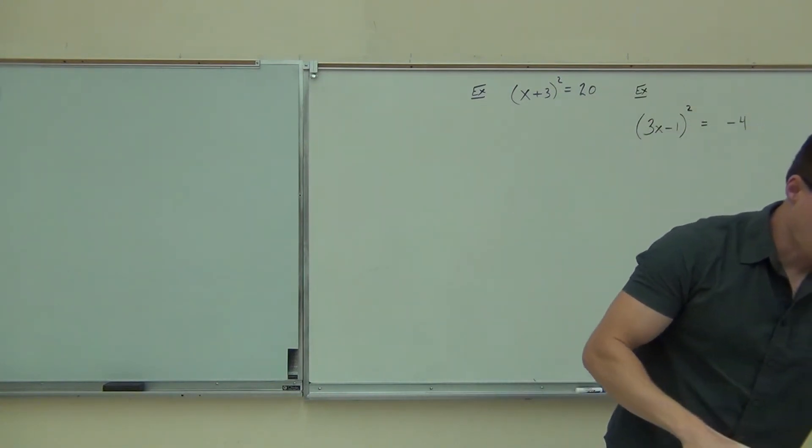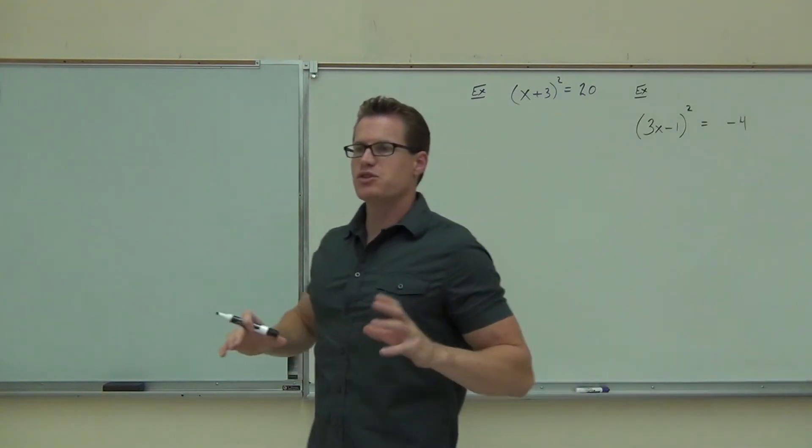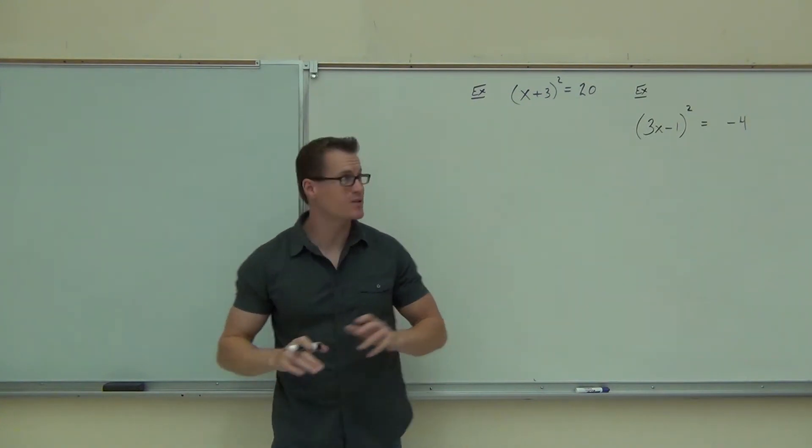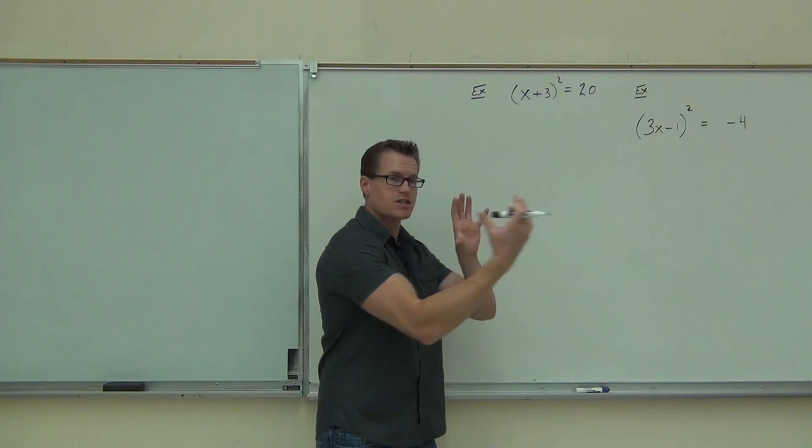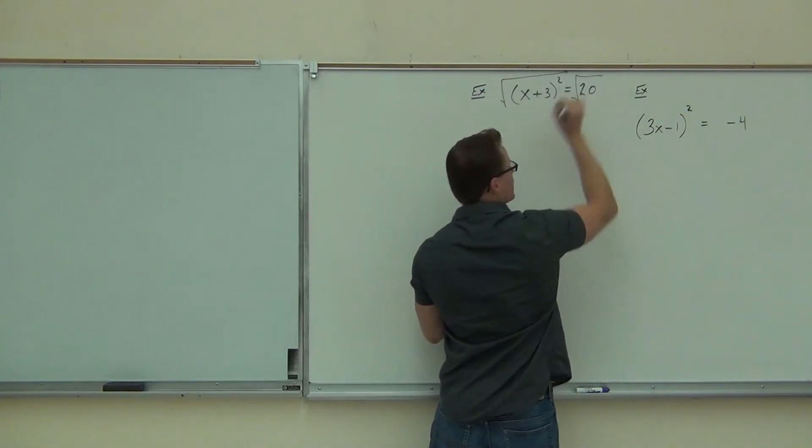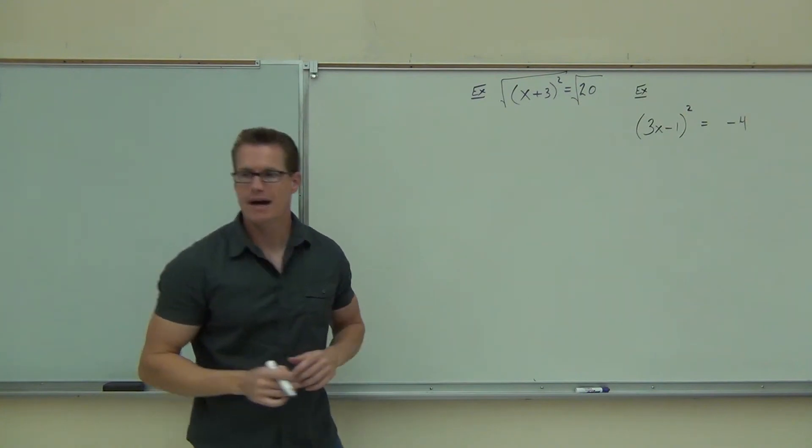Back up at our problem here. Do we have something squared equals to a number? Yes. All right, that's great. That's what we want, right? We want something squared equals to a number. If we have something squared equals to a number, I know that I can take the square root of both sides of that equation as long as I still have a plus and minus.